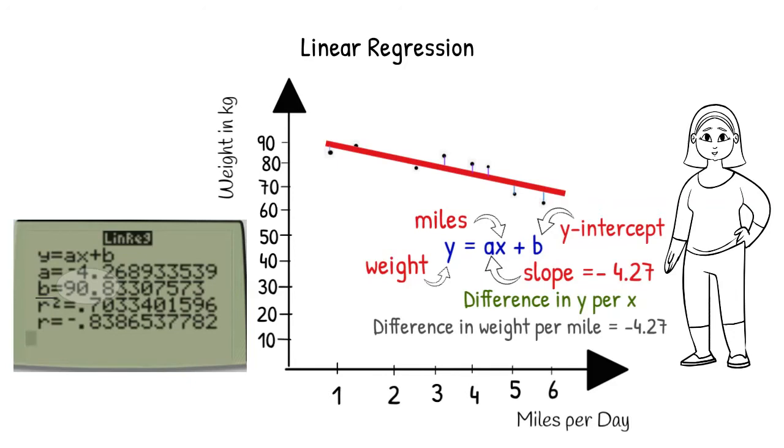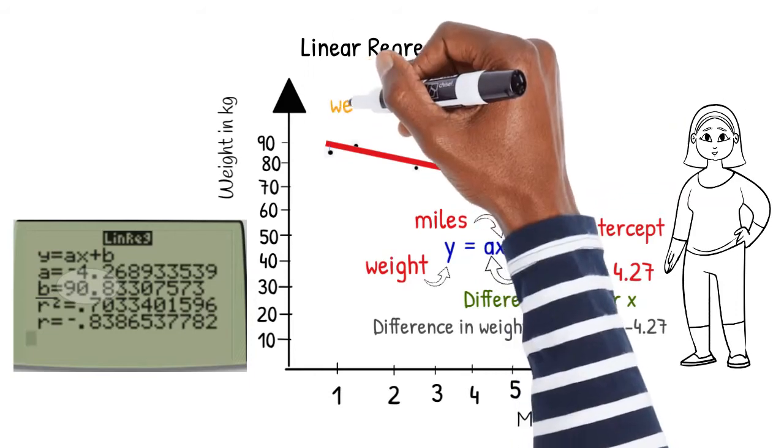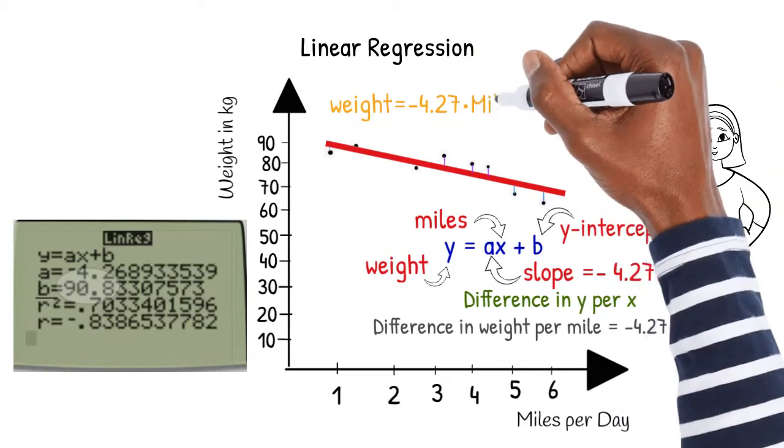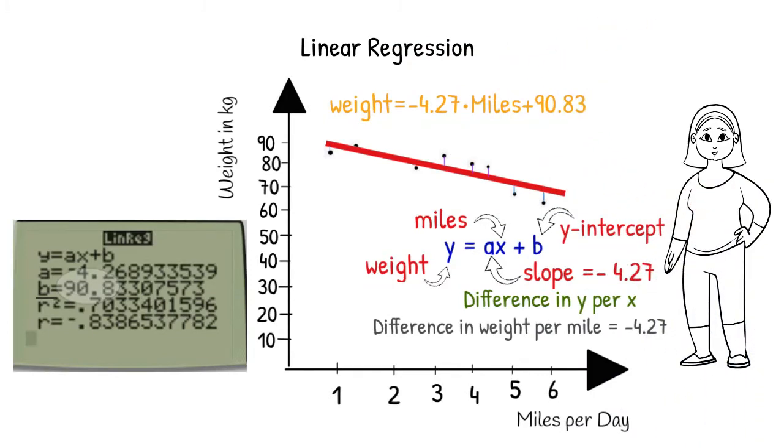Let's take a look at how to use our model to make predictions. Our equation tells us that weight is equal to negative 4.27 multiplied by the number of miles plus 90.83. We put a little hat on the weight to signify that it is not the actual weight, but a predicted value that we can get from utilizing our model.